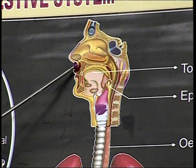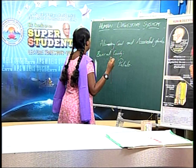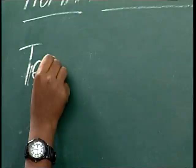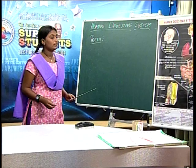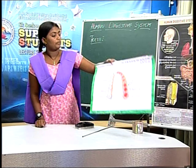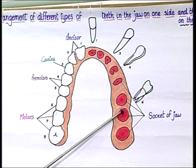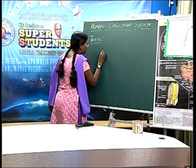The jaw holds four kinds of teeth and a tongue. Teeth are ecto-mesodermal in origin. These teeth are embedded in the sockets of the jaw. This type of dentition is known as thecodont dentition.